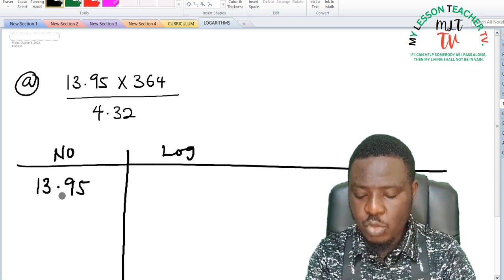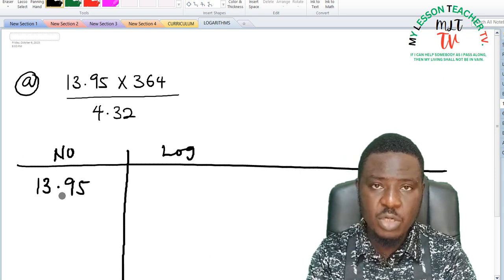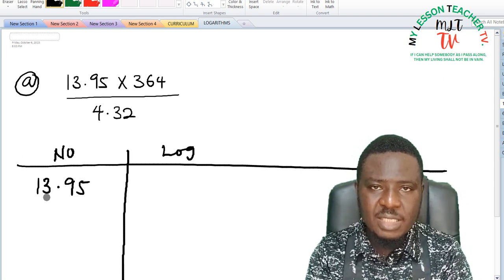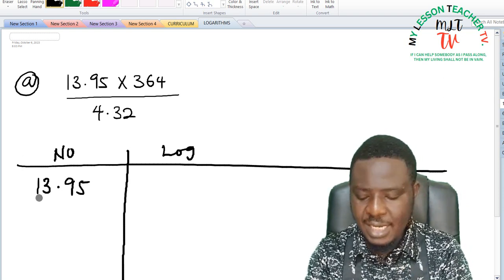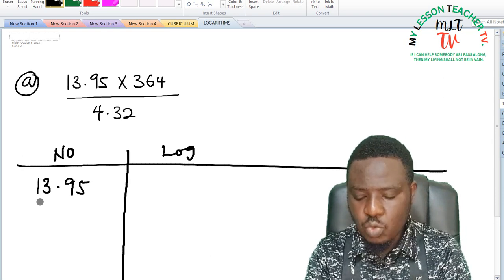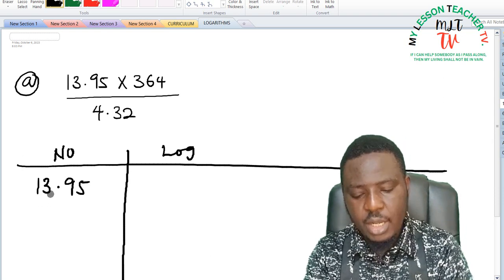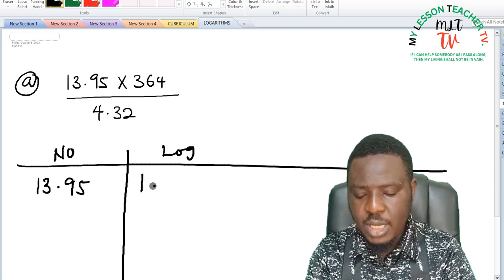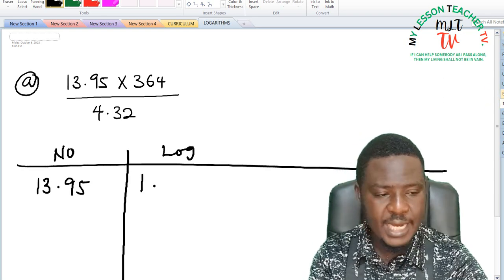And if you express this in standard form it's going to give you 1.395 times 10 to the power of 1, meaning the characteristics is 1. The characteristics is always 1 less than the number of digits, so since this is 2 digits that is 1 and 3, we have our characteristics now is going to be 1. So this is 1 point, you then look for 13 under 9.